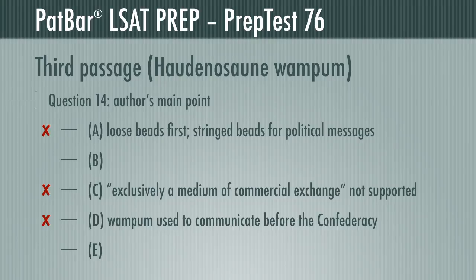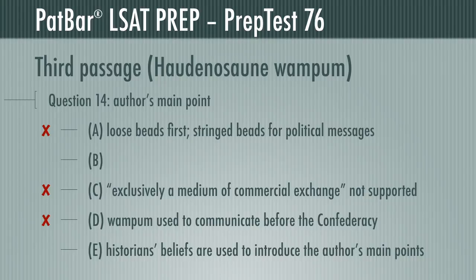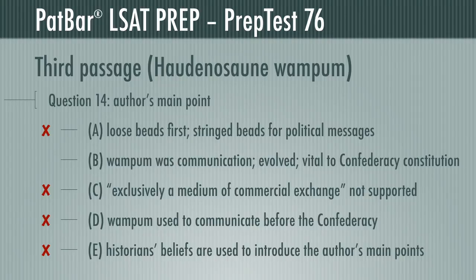Many test-takers have chosen E — not surprising, it does seem accurate. In fact, that most historians believe wampum to be primarily for payment is directly stated in the first paragraph. However, this introduces the author's main points about wampum's uses and why; it cannot be the main thrust. B is a precise summary of the passage: wampum started as communication, not as money; its use evolved, and eventually it would be used to encode the constitution of the Haudenosaunee Confederacy. B is correct. Question 14 is easy in retrospect — only one response hits all the main points. Good paragraph summaries will point you in the right direction.